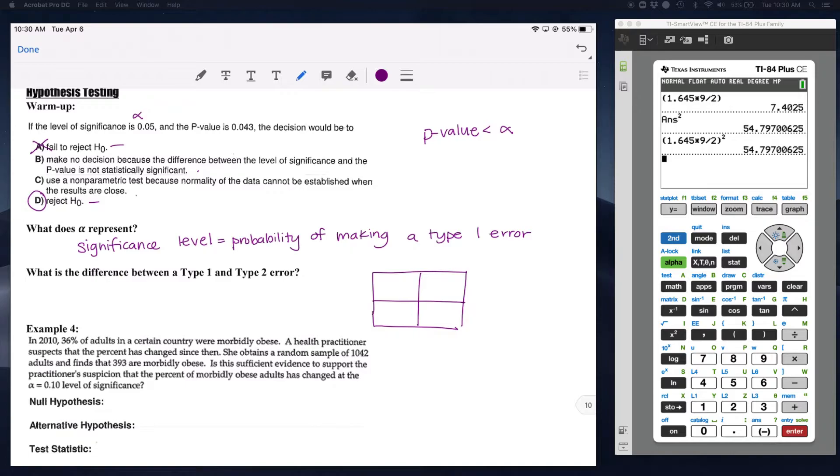Let's look at our type 1 and type 2 errors. We either reject H-O or we fail to reject. Remember, we never say we accept. We either have our null is true or our alternative is true as the two cases. If we reject the null and our alternative is true, that's a good thing, that's a smiley face. If we fail to reject the null and the null is true, that's also a good thing. We made the right conclusions. These other ones, when we reject the null and the null is true, that's a type 1 error. And our type 2 error is when we fail to reject the null even though the alternative was true.